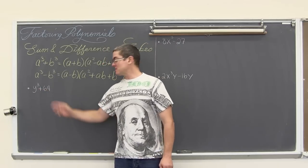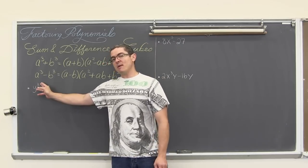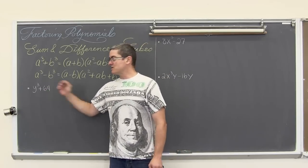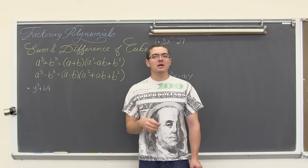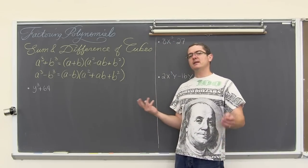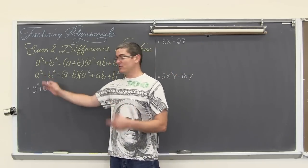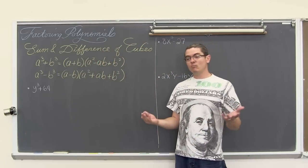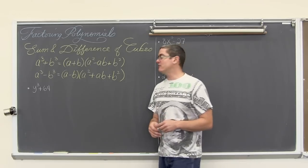Our first example: this y has an exponent that is divisible by 3, so that would be considered a perfect cube. And 64 — we can take the cube root of 64 and get a nice integer answer, because the cube root of 64 is 4, since 4 times 4 is 16, times 4 again is 64.